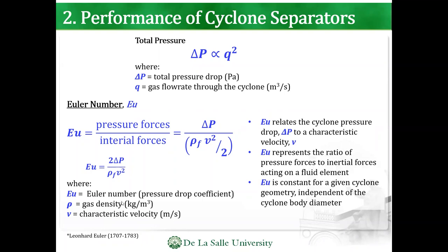So the final form is 2ΔP over density of the fluid times V squared, where V is the characteristic velocity. The Euler number relates to the cyclone pressure drop — pressure drop to a characteristic velocity. The Euler number represents the ratio of pressure forces to inertial forces, and it is constant for a given cyclone geometry, independent of the cyclone diameter.